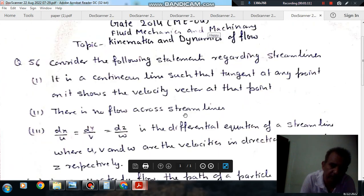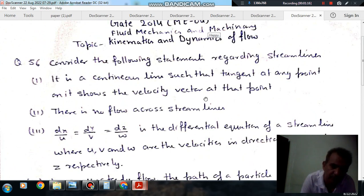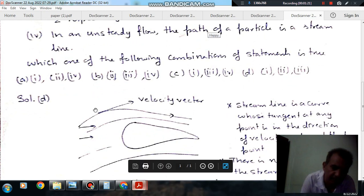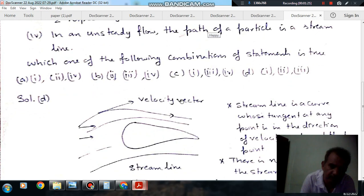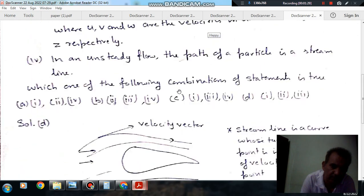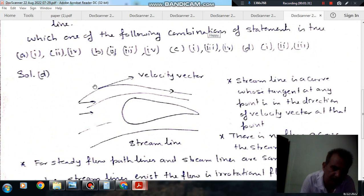So, first statement is: the streamline is a continuous line such that tangent at any point shows the velocity vector at that point. That statement is true, because these are the streamlines and this tangent vector is the velocity vector. Second statement is that there is no flow across streamlines, so across these streamlines there is no flow. Along the streamlines the flow takes place.